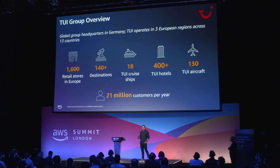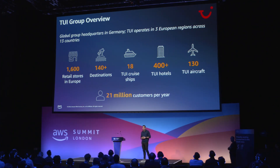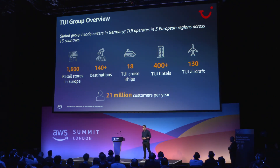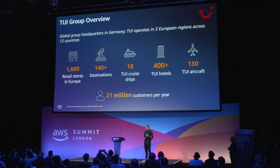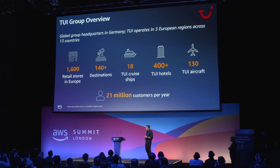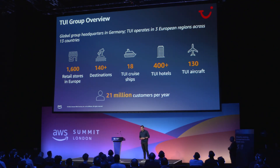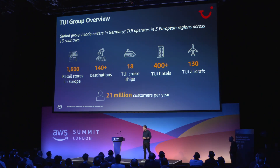TUI is an end-to-end holiday provider. We are one of the largest organisations in Europe with more than 55,000 employees. Our headquarters are in Hanover in Germany, and we have head offices in 13 countries across Europe, and we operate in three European regions. Most people don't really know that TUI is an asset company. We own more than 100 aircraft, 400 plus hotels, and 18 cruise ships.